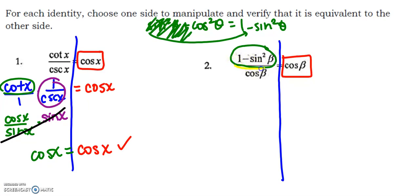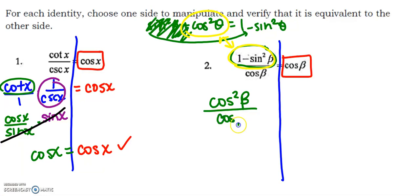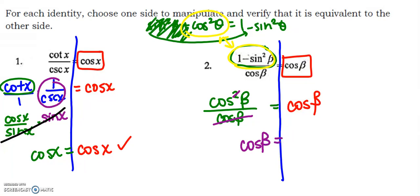If I subtract sine squared to the other side, I can replace the whole expression one minus sine squared with cosine squared — that's an even substitution. So my numerator becomes cosine squared of beta, over cosine of beta, and I'm trying to show that equals cosine of beta. Because I have cosine squared over cosine, I can cancel one factor, and I get that cosine of beta is in fact equal to cosine of beta. I did all my work on one side, making legal substitutions with identities.